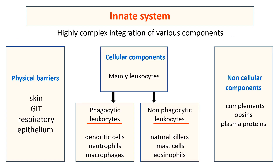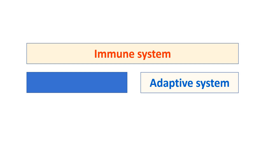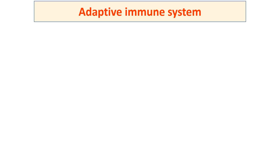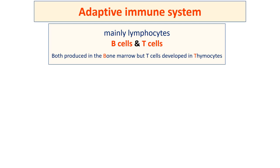Here is a comprehensive view of the innate immune system. Now let's have a look at the adaptive immune system. The adaptive immune system is composed mainly of lymphocytes — B cells and T cells. Both B and T cells are produced in the bone marrow, but T cells are developed later from thymocytes.